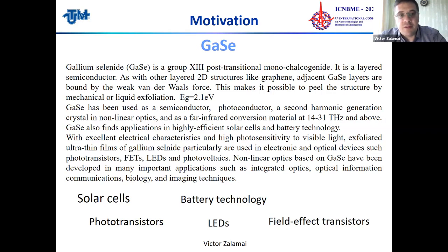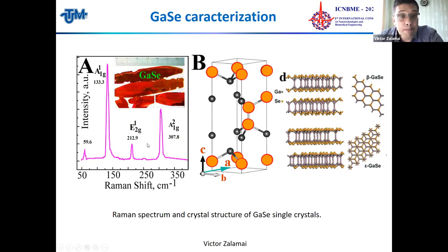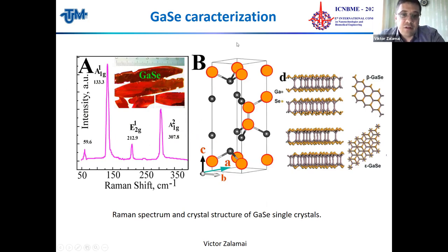We investigated the optical properties of this material. Here you can see the crystals of Gallium Selenide. The crystals are quite large and can be cleaved from the cleavage plane, giving a mirrored natural surface. The crystal lattice, as shown in this slide, exists in several polytypes.